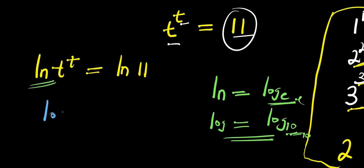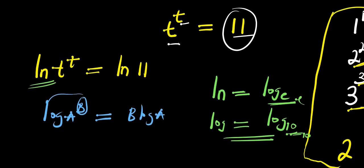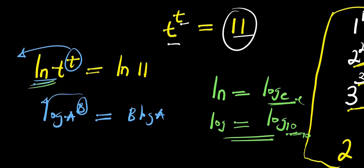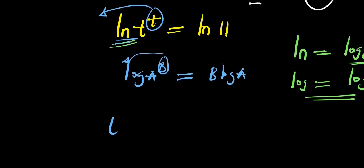We are going to apply the power property of logarithm: if you have log of a to the power of b, this equals b times log of a — the exponent comes in front of the log. Applying this here, the t at the exponent comes in front of the natural log. So what we have is t times ln of t, and this equals ln of 11.